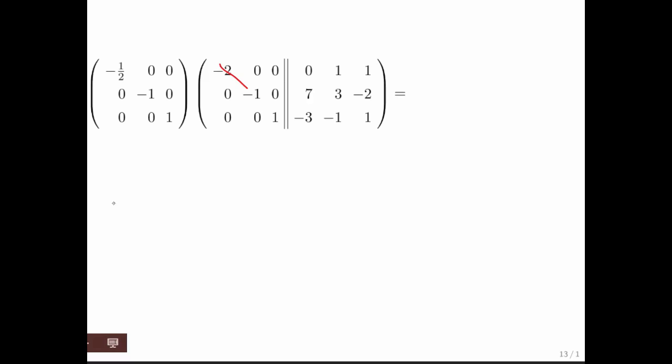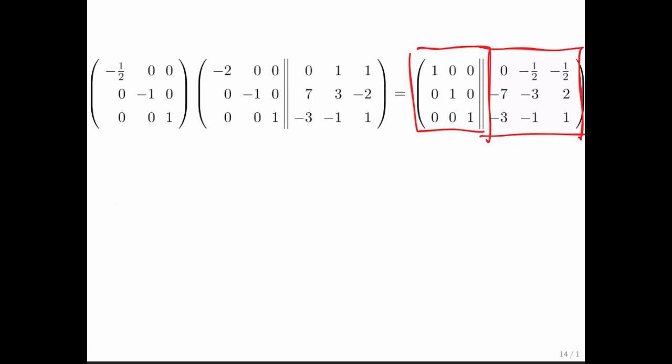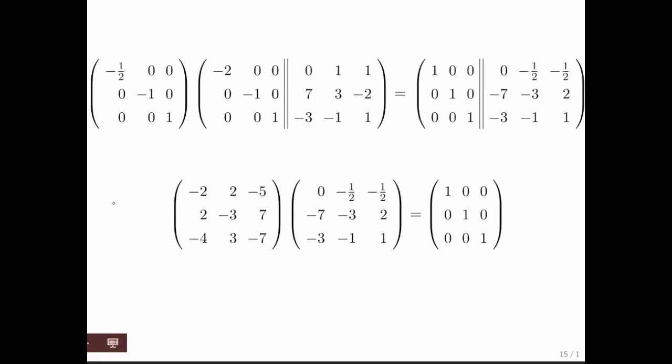And if we then take that diagonal matrix, invert it, and multiply, what we end up with is the identity here and the inverse of the original matrix right there. And if you multiply the original matrix times the inverse, you better get the identity.